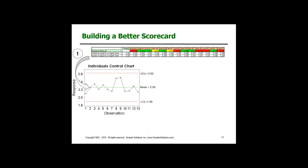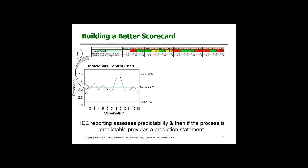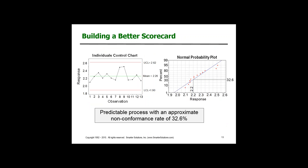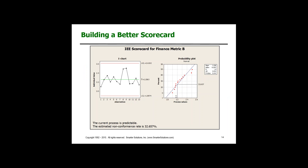If we look at how we might examine this data differently, it's kind of a two-step process. First, look at whether the process is stable. Then, if it is, do a probability plot when we've got continuous data. We want to make a statement everyone can understand about how the process is performing. We put a statement below that says it's a predictable process with about a 32.6% issue — that's what we expect in the future, though it's only an estimate. This add-in to Minitab statistical software can create these charts automatically, and this can also be used as dashboards throughout the organization.